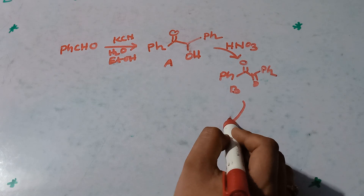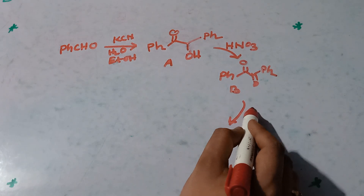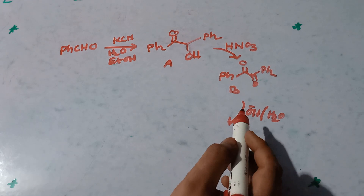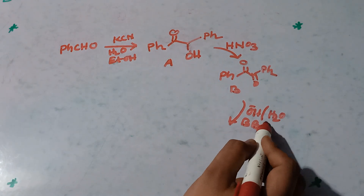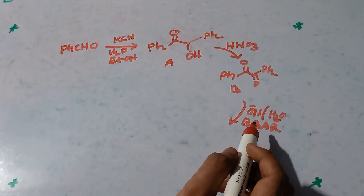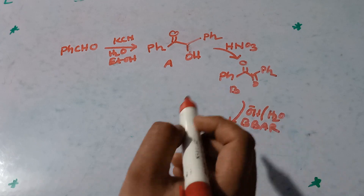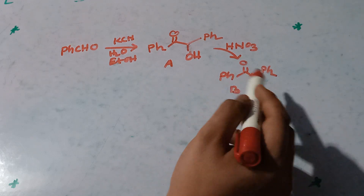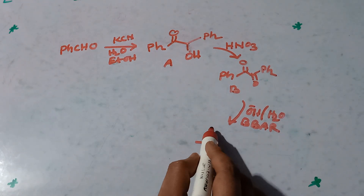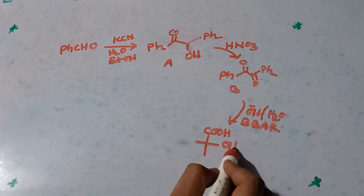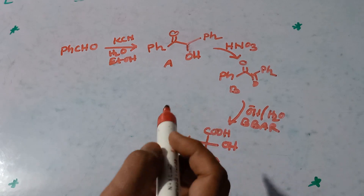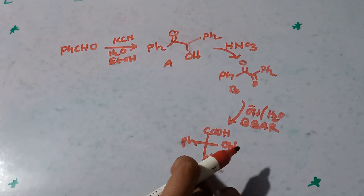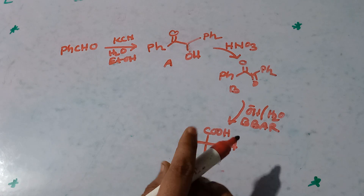Now, if we add OH⁻ in the presence of water, this is again a very important name reaction or rearrangement. This is called the benzilic acid rearrangement. If you can't memorize it, search on Google and understand the mechanism. When you apply that mechanism to this compound, the product is benzilic acid. This compound is our compound C.